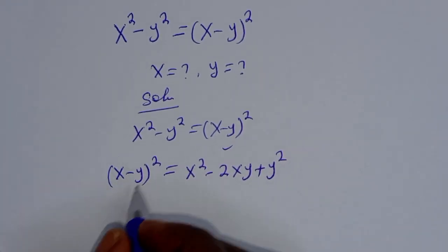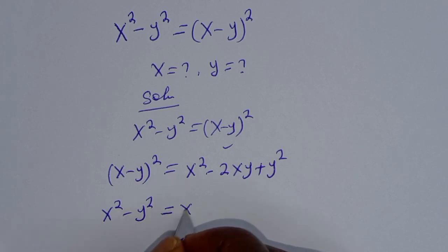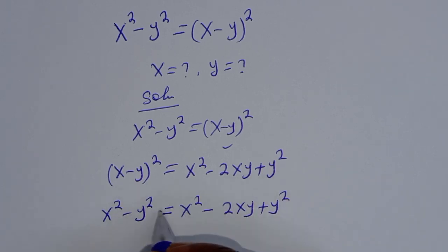Then this is x squared minus y squared is equal to x squared minus 2xy plus y squared. Then if you look at this,